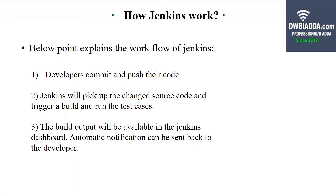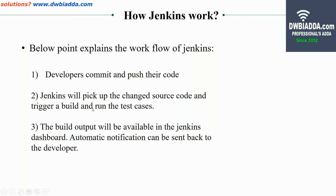So how Jenkins works: first, developers commit and push their code. On the second step, Jenkins picks up the changed source code and triggers a build and runs test cases. When source code is pushed, Jenkins picks it up and triggers a build using many deployment tools, and a certain set of test cases are implemented. The build output is available in the Jenkins dashboard, and automatic notifications are sent back to the developer.